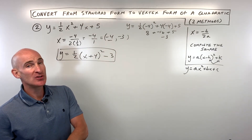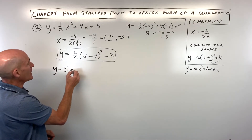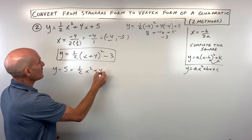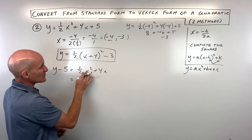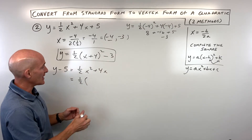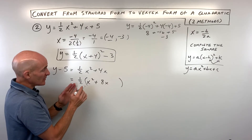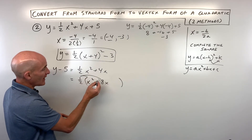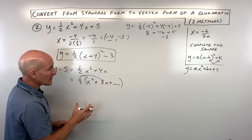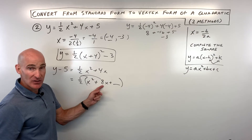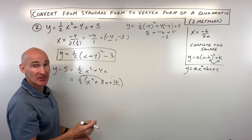Now let's do the same problem using the completing the square method. First, subtract the 5 to the other side to get the constant out of the way. Then factor out the leading coefficient — the a value. You don't want to do the greatest common factor; just factor out one-half. That becomes one-half times x squared plus 8x. You can check by distributing: one-half times 8x gives you back 4x, and one-half times x squared gives back one-half x squared. Then take half of 8, which is 4, and square it to get 16. It's actually one-half times 16, which is 8, being added to the right side.